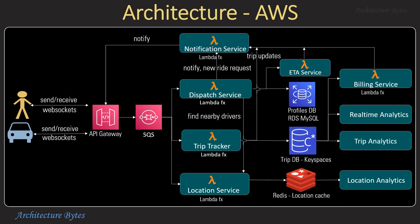Here is the same architecture using AWS services. Behind the API Gateway is an SQS messaging service. Microservices are implemented as Lambda functions, though these could also be implemented as containerized applications.